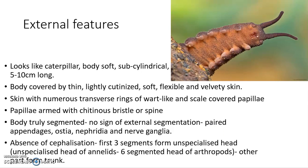Looking at the external features: they are small, looking like caterpillars, with a soft sub-cylindrical body usually about 5 to 10 centimeters long. The body is covered by a thin, lightly cutinized, soft, flexible, and velvety skin. Another peculiarity is that the skin has numerous transverse rings of papillae, which are wart-like and scale-covered.